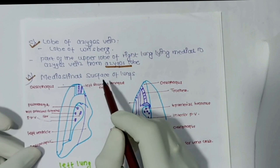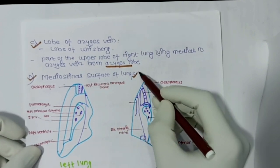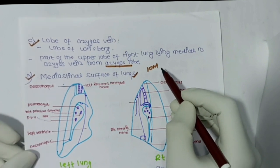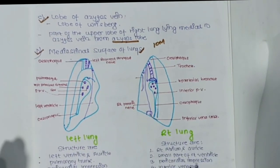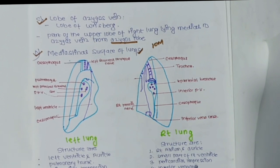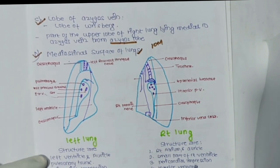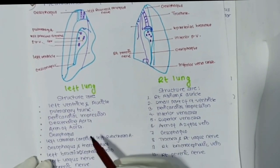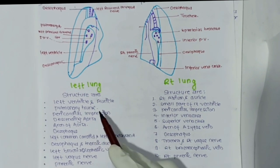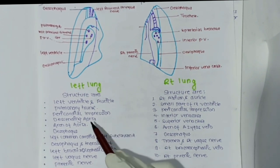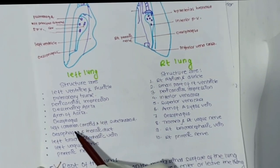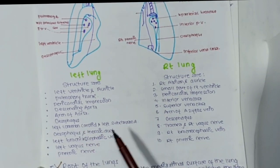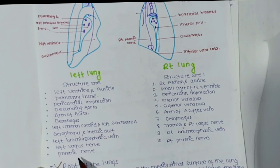The mediastinal surface of the lung is a separate question in MBBS exams and is most frequently asked. In the left lung, structures include the left ventricle, left auricle, pulmonary trunk, pericardial impression, ascending aorta, arch of aorta, esophagus, left common carotid and left subclavian artery, thoracic duct, left brachiocephalic vein, left vagus nerve, and phrenic nerve.